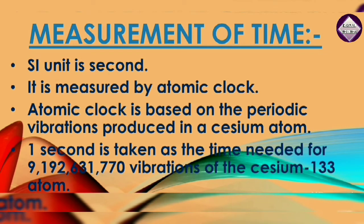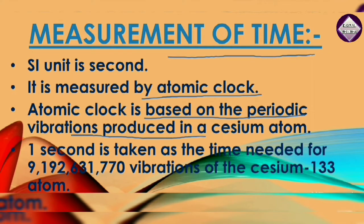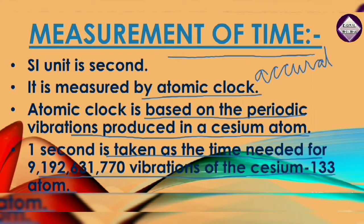Now have a look at the measurement of time. To measure any time interval, we need a clock. Time is measured by an atomic clock, which is based on the periodic vibrations produced in a cesium atom. In the cesium atomic clock, the second is taken as the time needed for a specific number of vibrations of the cesium-133 atom. The cesium atomic clocks are very accurate. The SI unit of time is second.